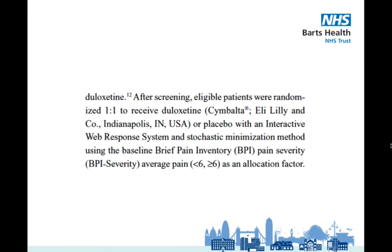So what does that paragraph mean? Well, the one-to-one tells us the ratio of people in each group, so for every person that got assigned to the study group, a person was assigned to the placebo group to ensure there were roughly even numbers.